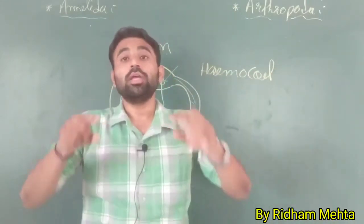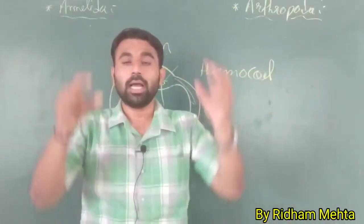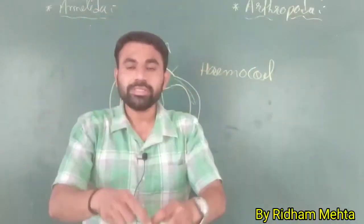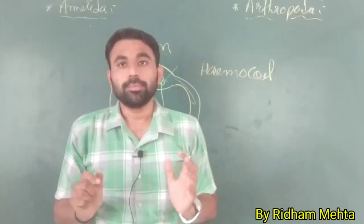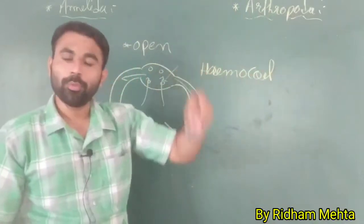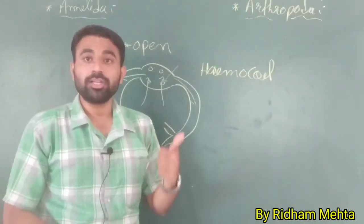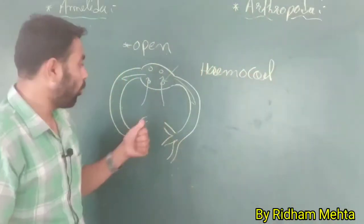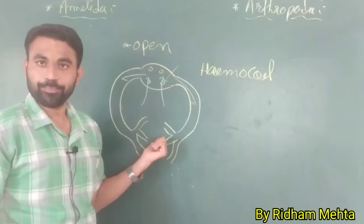The blood opens into the hemocoel or body cavity. That is why it is called the open type of circulatory system.